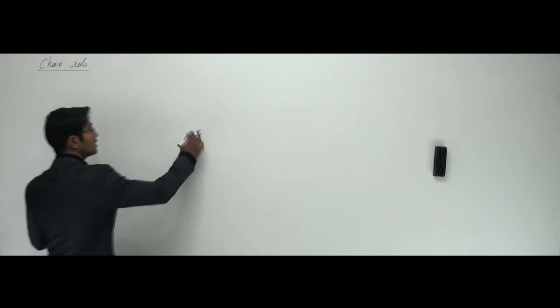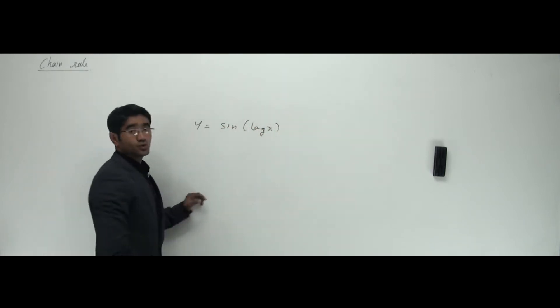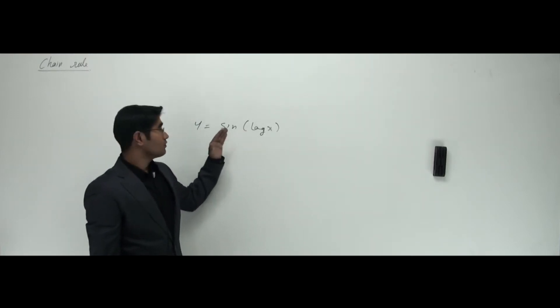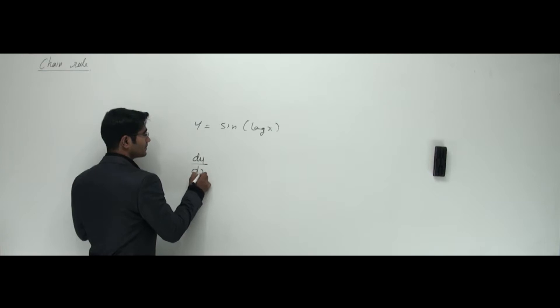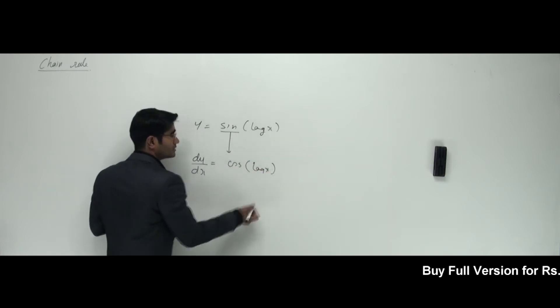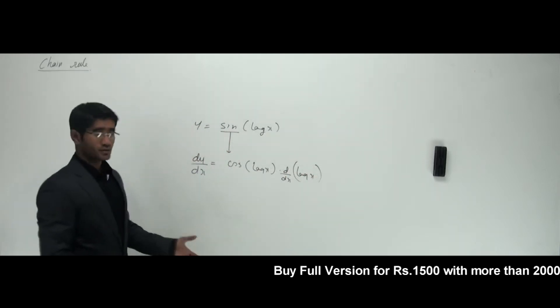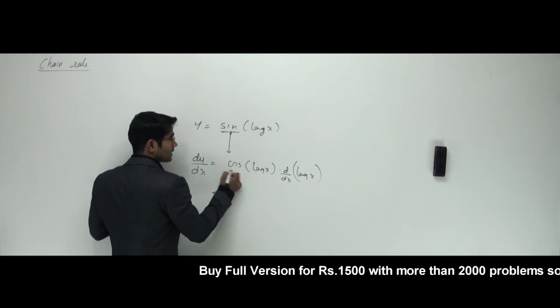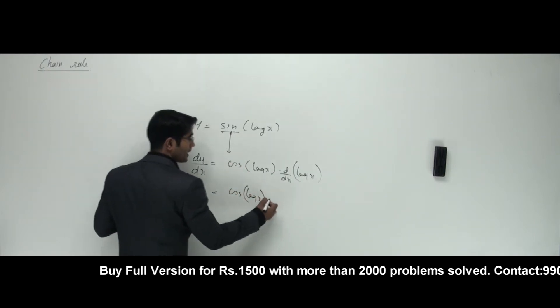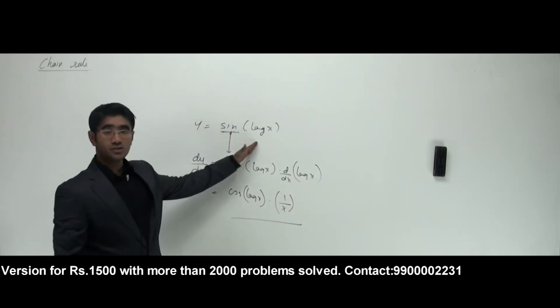So far we understood chain rule when two functions are involved. We know that for y = sin(log x), there are two chains — the log function and the sine function. When we differentiate, dy/dx gives cos of log x, and then we differentiate log x to get 1/x. This is a simple chain with only two functions.